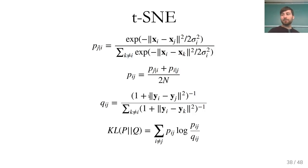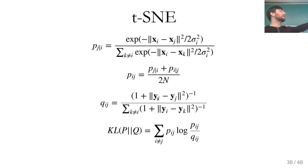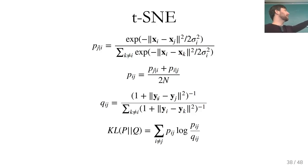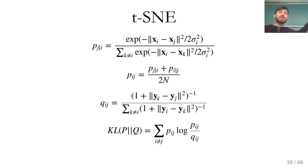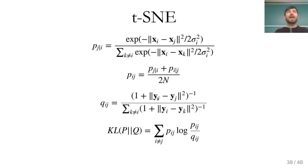The y's are randomly initialized and then moved around so these distributions are similar. Very roughly: if things are close together in the original space, you want embedding points to be close in the new space. The Student t-distribution means you really only care about things that are very close to each other; if they're further away you don't care so much about ensuring the distances. The axes you end up with have no meaning whatsoever, but the pictures you get are great.